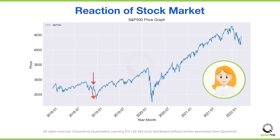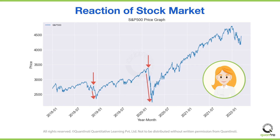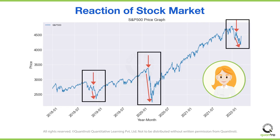She has seen this quite a few times. For instance, in March 2020, when the COVID-19 pandemic was declared, the S&P 500 index declined by more than 30%. When the Russia-Ukraine conflict started, even then the market declined. She observed that during these times the market prices fluctuate sharply.